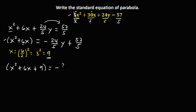Bring down negative 24 over 5y, then plus 57 over 5. Then, the number we added on the left side must also be added on the right side. Since we added 9 on the left, therefore also plus 9 on the right side.